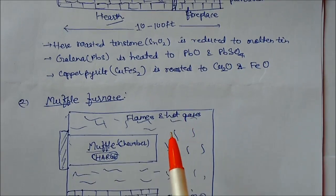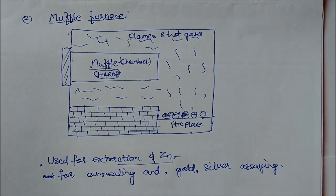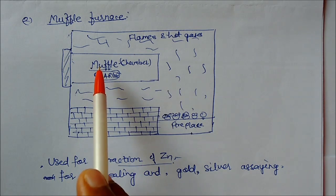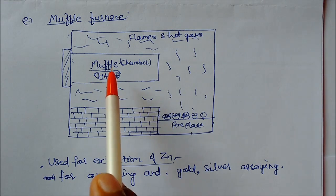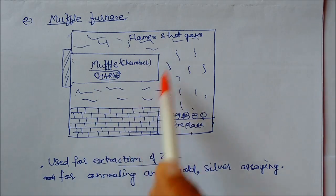Next furnace is muffle furnace. Muffle furnace is similar to reverberatory furnace but modified. You can see here again we have stone walls, some fireplace is there burning, and here is one chamber which is called muffle. Here we are putting charge, charges again ores and metal, etcetera.